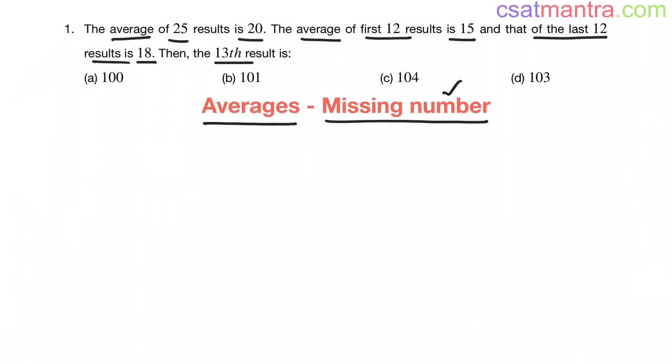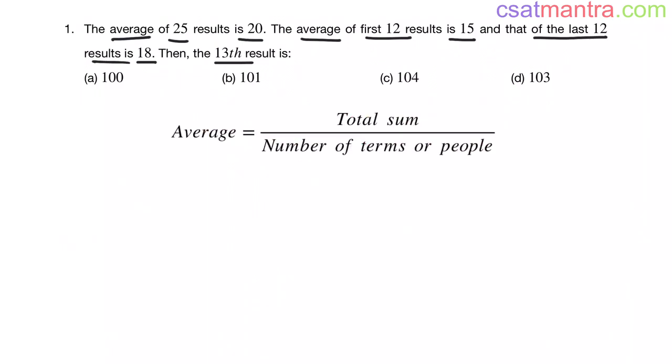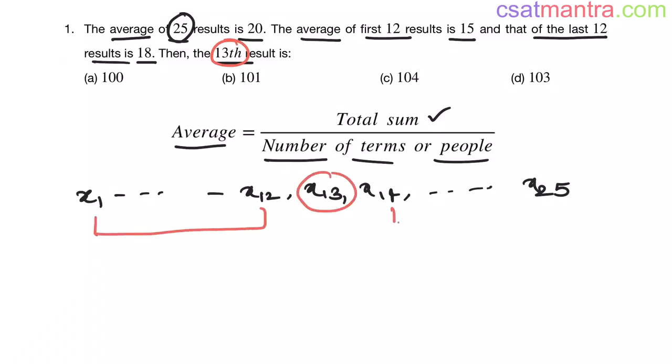Link to yesterday's problem is given below in the description. We know average equals total sum by number of terms or number of people. Here we are talking about average of 25 results. Let's assume these 25 results as x1 up to x12, x13, x14 up to x25. We are asked to find 13th result that is x13. These are first 12 results. These are last 12 results. 12, 12 and then this is 1. Totally 25.